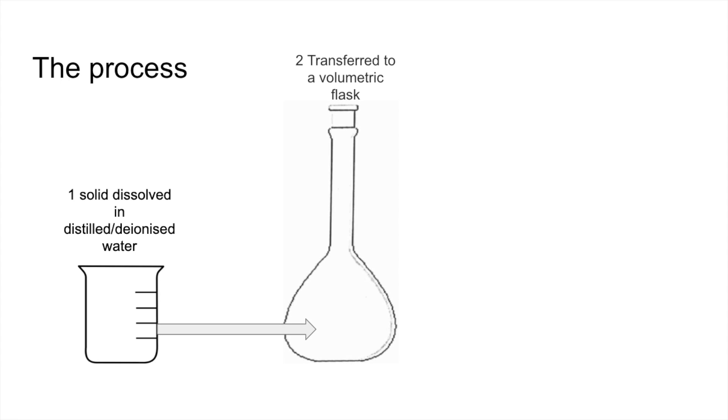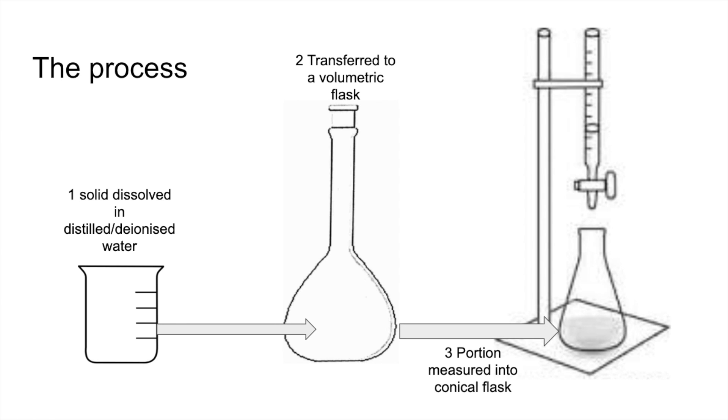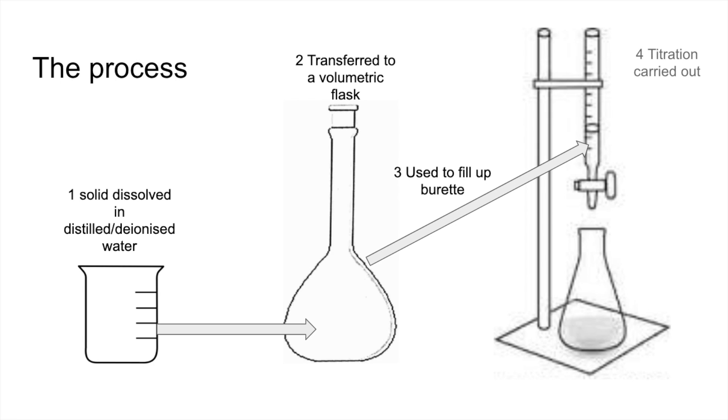Before we go into the questions, I'm going to go through the process that's typically involved in these types of calculations. They normally start by a solid being dissolved in some distilled or deionized water. That's then transferred into a volumetric flask, and then a portion of it can either be measured into the conical flask or used to fill up the burette. Then we would perform the titration.